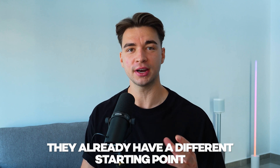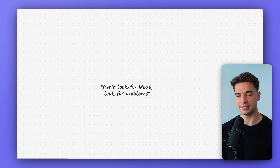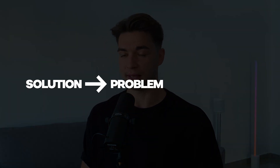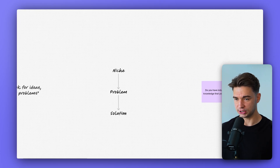The first fundamental difference I've discovered for successful SaaS is that they already have a different starting point — they come from real problems. A lot of ideas out there start with an idea and then people look for problems they can solve with it. The right approach is the other way around: first start with a niche, identify a clear problem in that niche, and then come up with a solution.